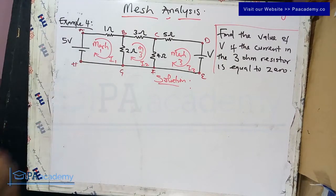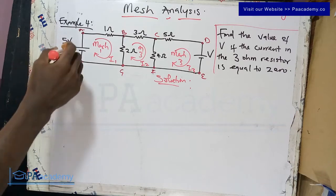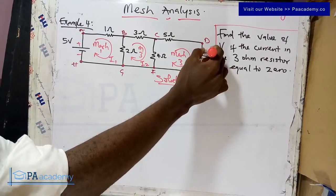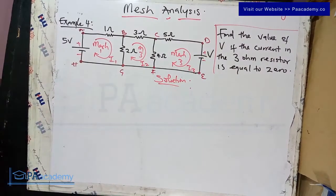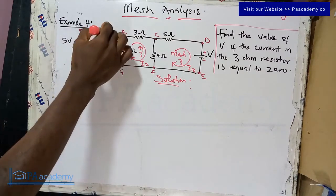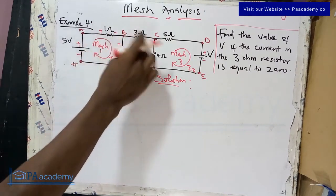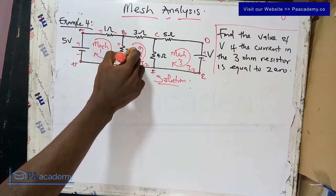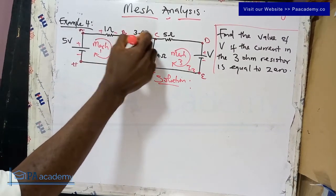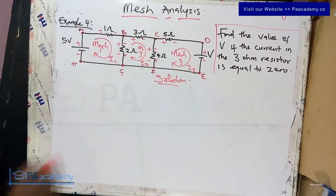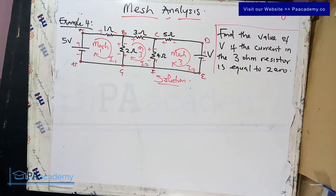Now that we've taken the direction of our currents, let's add the polarities. Starting with the voltage source — the longer side is positive, so it's positive then negative. For mesh one, the resistors get plus and minus in the direction of current. We continue adding polarities for mesh two and mesh three across all resistors.